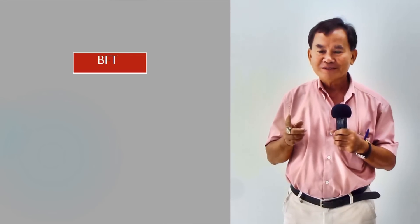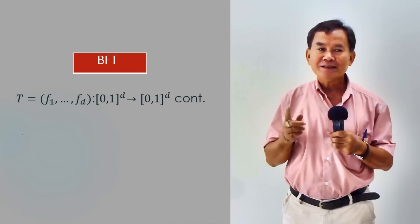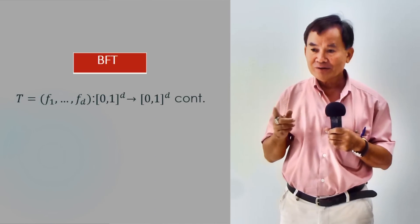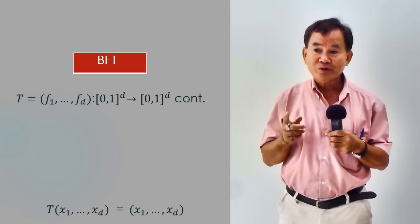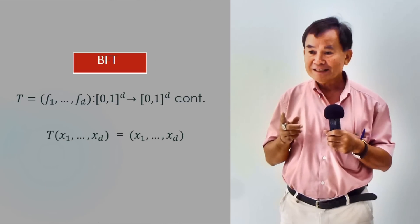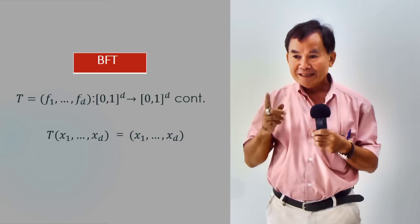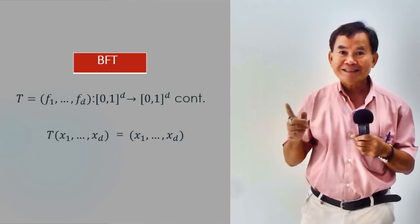The Brouwer Fixed-Point Theorem states that, let T be a continuous function from [0,1]^d into itself, then there exists a point (x1, ..., xd) such that T(x1, ..., xd) equals (x1, ..., xd).